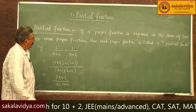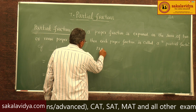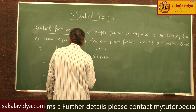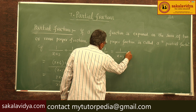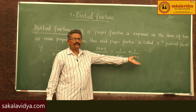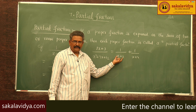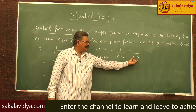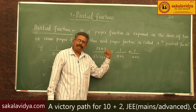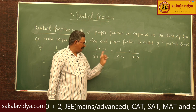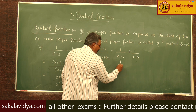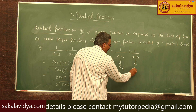This is a proper fraction. We write 2x plus 7 over x squared plus 7x plus 12 equals 1 over (x plus 3) plus 1 over (x plus 4). Now, (x plus 3) and (x plus 4) are irreducible factors — they cannot be split further. That is why 1 over (x plus 3) and 1 over (x plus 4) are proper fractions, and this proper fraction expressed as a sum of two proper fractions is called a partial fraction.